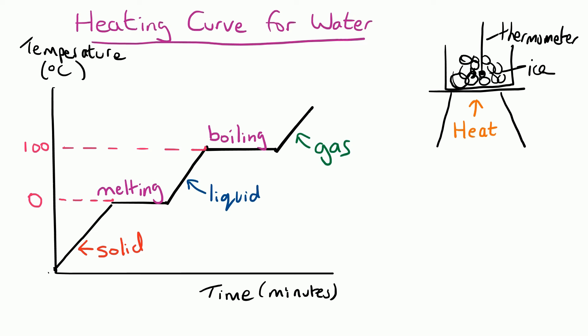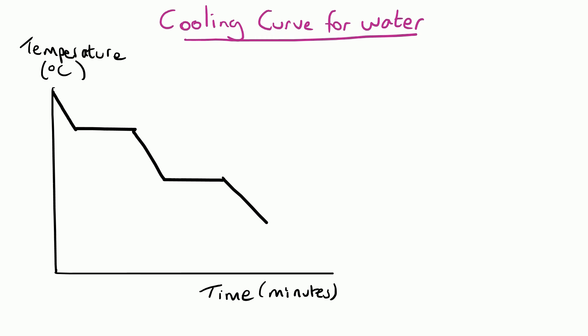If we do the opposite experiment and start off with the gas and gradually cool it down, to start with the gas starts to decrease in temperature. Then the first plateau of the graph is where a change of state is happening and we're going from a gas to a liquid, so that must be condensation. Then the liquid cools down as the particles lose kinetic energy and start to move around slower.